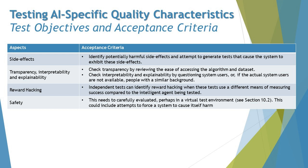For side effects, the acceptance criteria could be to identify potentially harmful side effects and attempt to generate tests that cause the system to exhibit these side effects. The approach is to conduct those activities and executions which result in the possible side effects, measure them, and if the system exhibits them as expected, that meets the desired acceptance criteria.